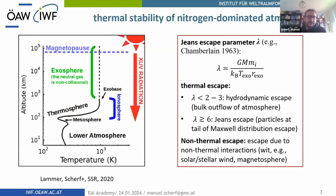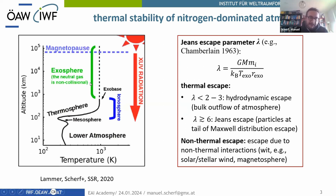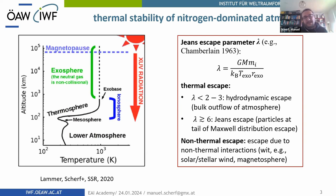I want to give a brief introduction to upper atmospheres. On the left is a sketch of Earth's atmosphere showing the lower atmosphere and the upper atmosphere — the thermosphere — ranging from the mesopause up to the exobase, where the gas becomes essentially collisionless. For Earth, even though surface temperatures average below 300 Kelvin, the thermosphere can reach up to 1,000 Kelvin and extends 800 to 1,000 kilometers above the surface. This is because short-wavelength radiation — X-rays and extreme ultraviolet below about 100 nanometers, together called XUV — is absorbed in the thermosphere and heats it.